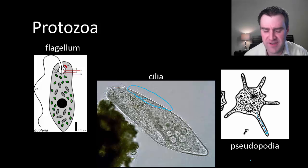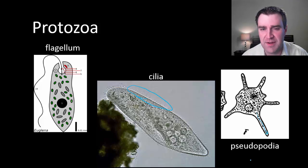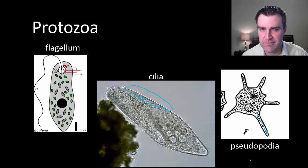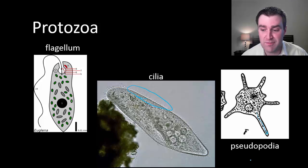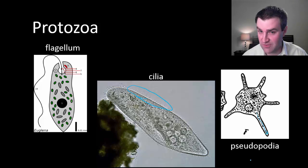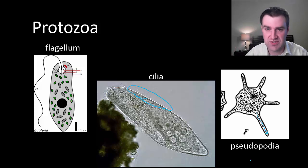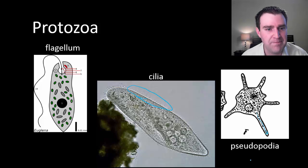There are even some protozoans that don't move themselves but can use other organisms to help them move from host to host. A very famous example is plasmodium, which causes malaria. It can move through the bloodstream of humans to infect and reproduce, and it can also hitch a ride through mosquitoes that suck our blood to get to the next human host — pretty nasty.